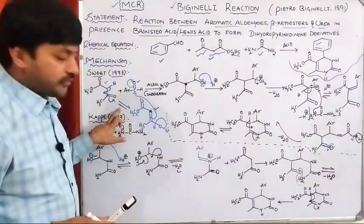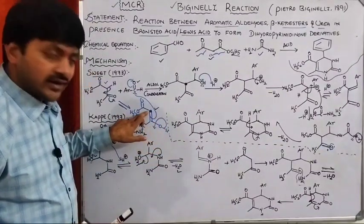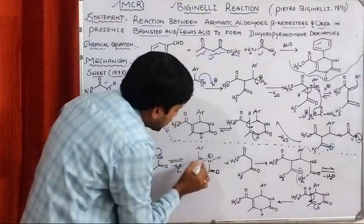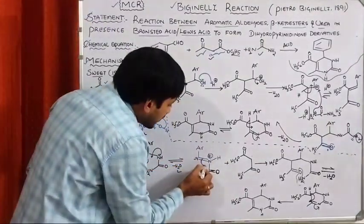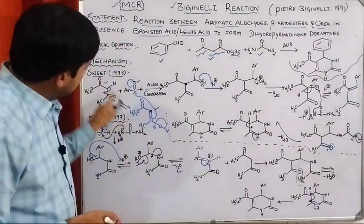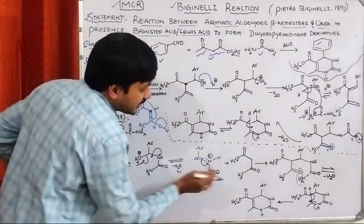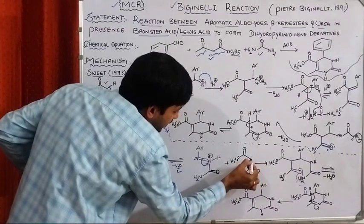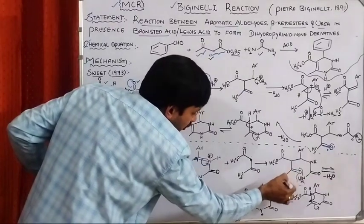Initially the beta-ketoester involves in keto-enol tautomerism. The oxygen forms a pi bond, and the carbon gets a minus charge. This minus charge attacks the electrophilic carbon of the N-acyliminium intermediate. Thereby the pi-bonding electrons move accordingly. Because of that, we get an intermediate with Ar, NH, C=O, NH2 attached to the beta-ketoester carbon, which bears C=O, OC2H5, and C=O, CH3 groups.